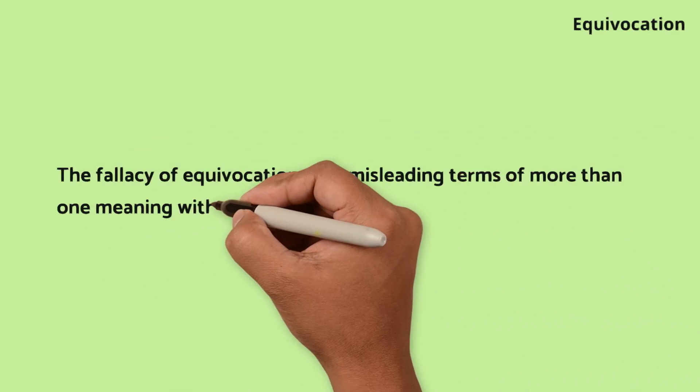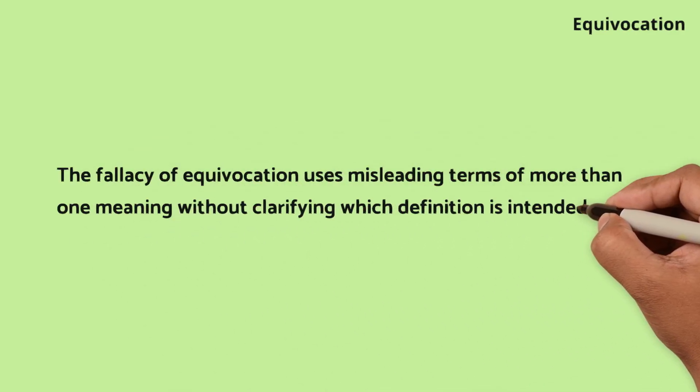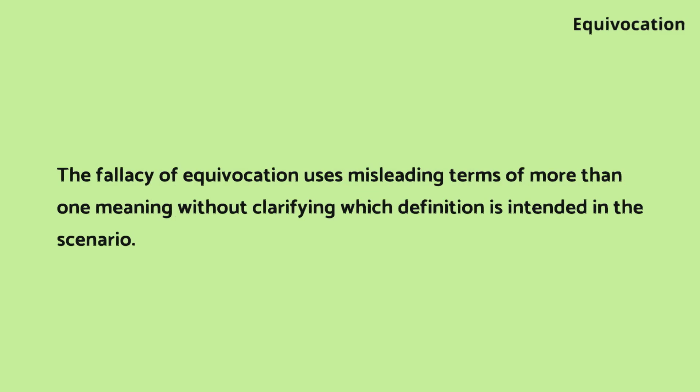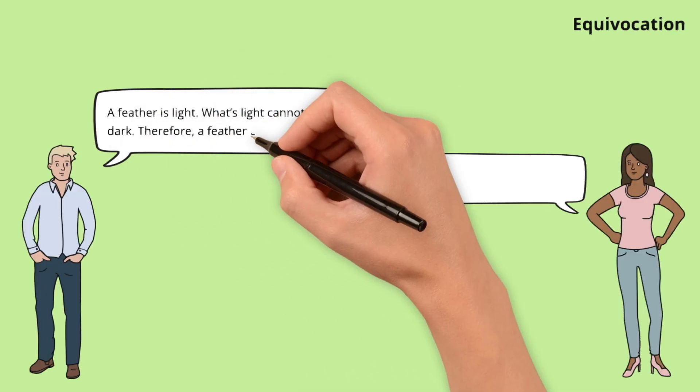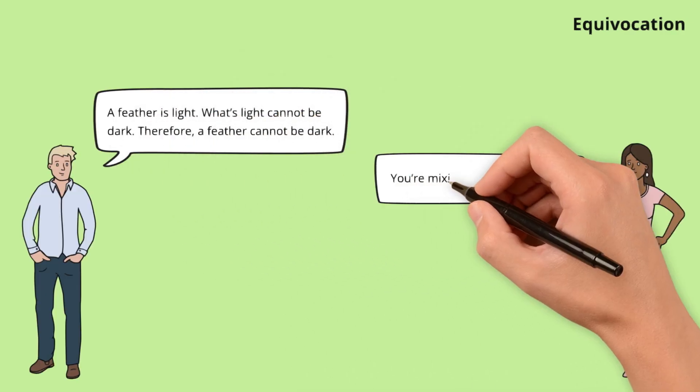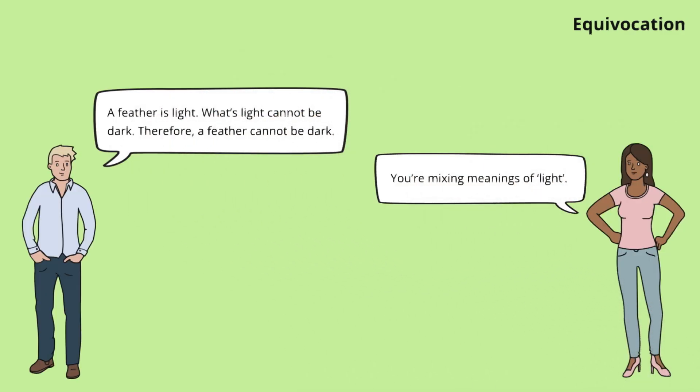Equivocation. The fallacy of equivocation uses misleading terms of more than one meaning without clarifying which definition is intended. Liam plays on the different meanings of 'light' to make a misleading argument. Zoe clarifies the misuse of the word, spotlighting the need for clarity in definitions.